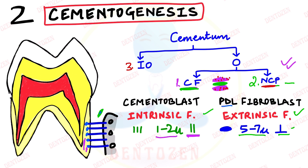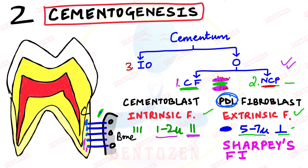Here is a viva question: the ends of the PDL fibers which get embedded inside the cementum on one side and into the bone on the other side are called Sharpey's fibers. The important word is 'embedded' — they are the embedded ends of the PDL fibers. Eventually these fibers also get mineralized.